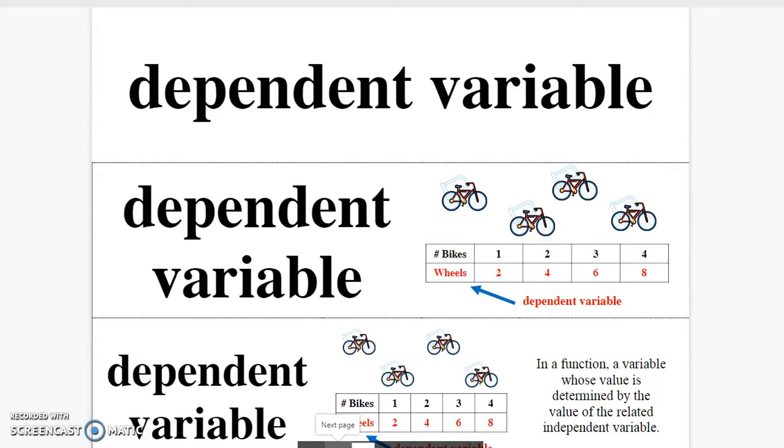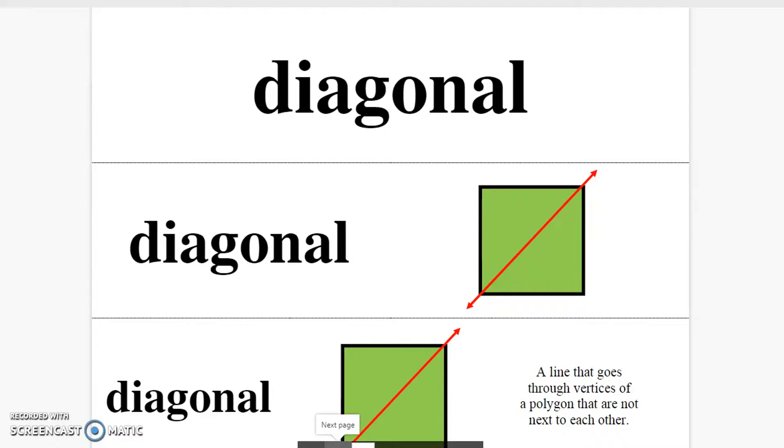Dependent variable. A variable whose value is determined by the value of the related independent variable. Diagonal. A line that goes through the vertices of a polygon that are not next to each other.